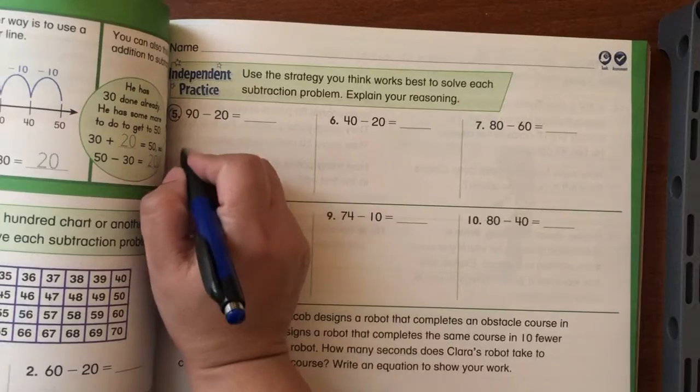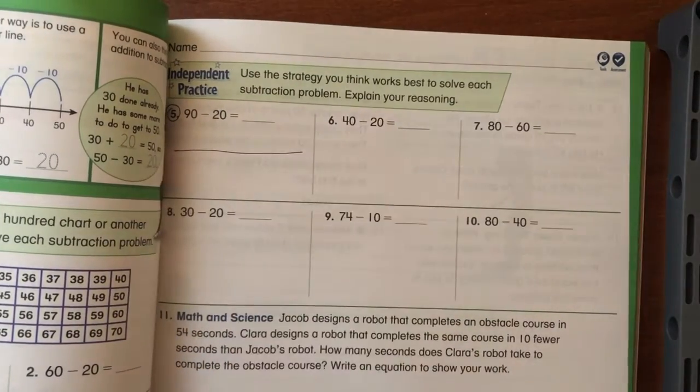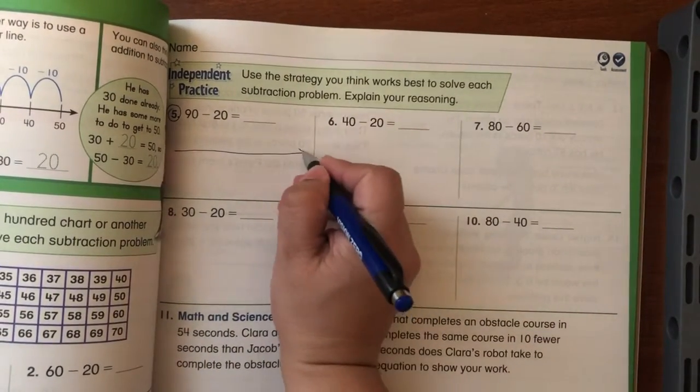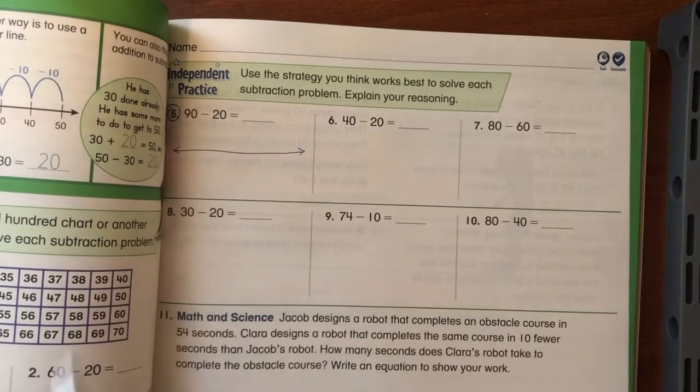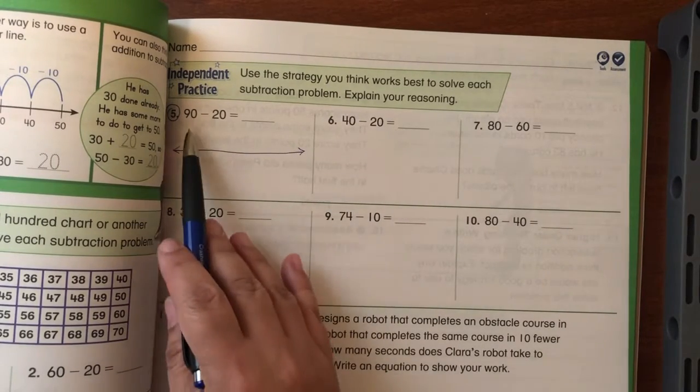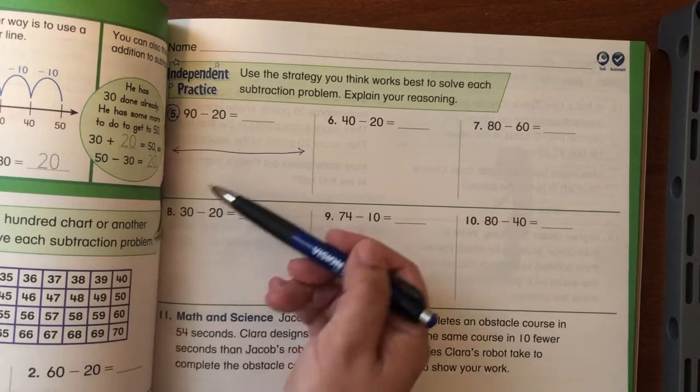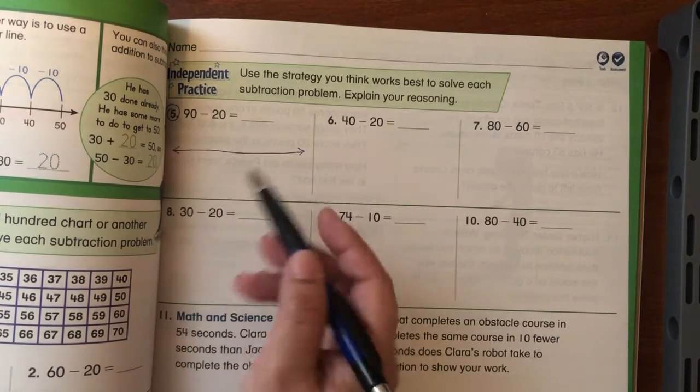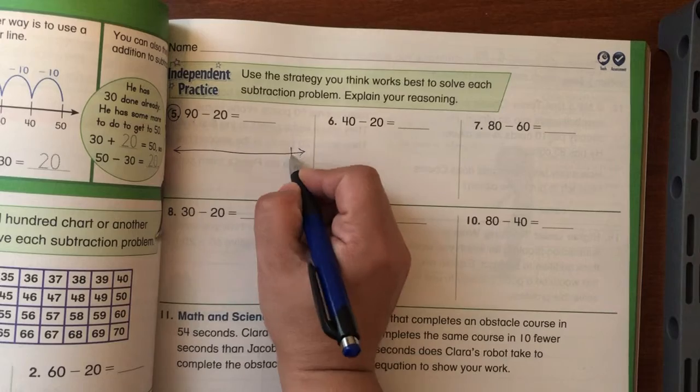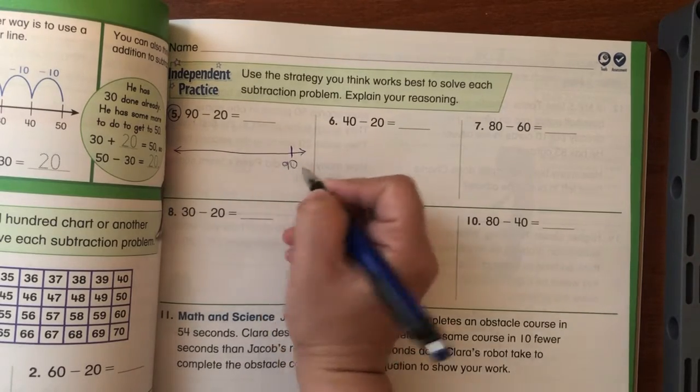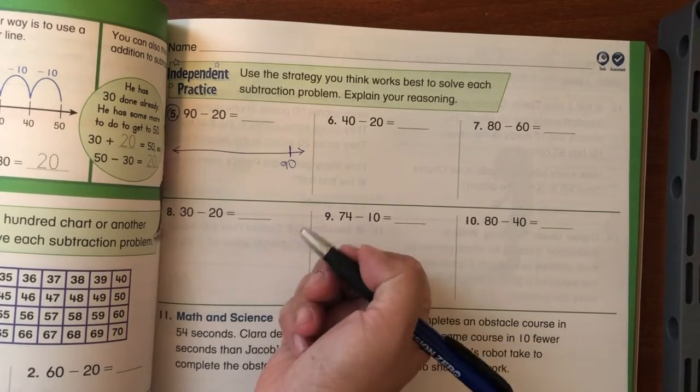So my open number line, I draw it, then I do my arrows. Then I know that 90 is what I have, and since it is telling me that I need to subtract, I know that I'm going to go back. So I want to start with 90 here and I'm going to prepare myself to go back.